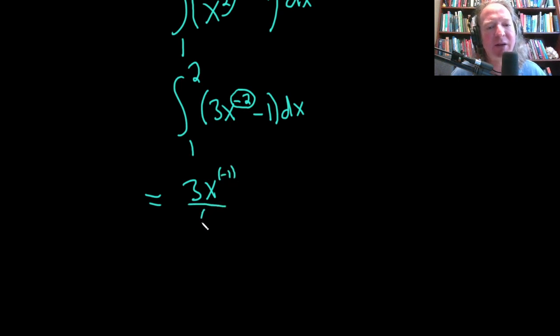Then we divide by negative 1, minus integrating 1 that's just going to give us x. And this is a definite integral, so we don't need the plus c. I'm going to use a bracket and then I'll write the lower limit of integration here and the upper limit here.